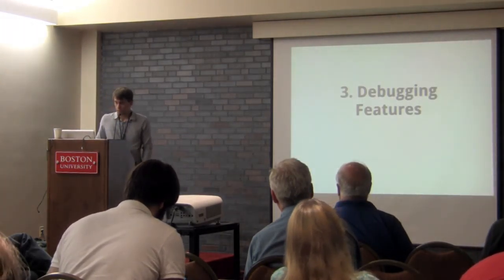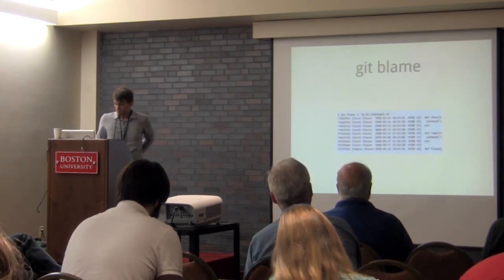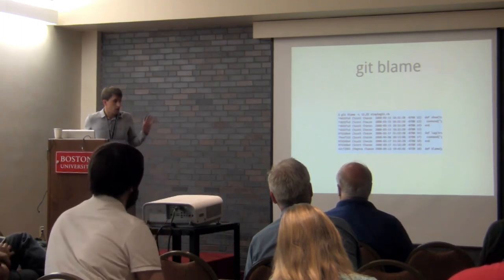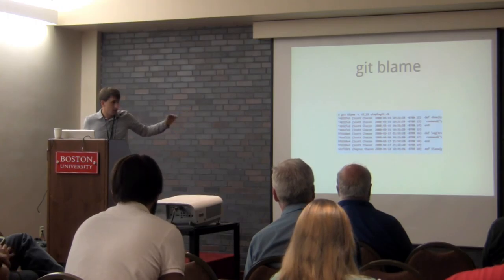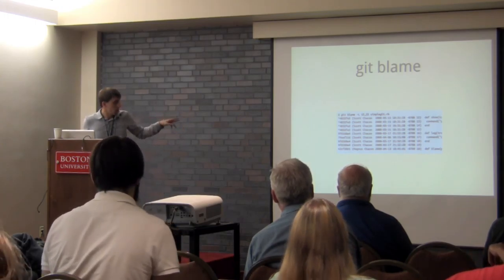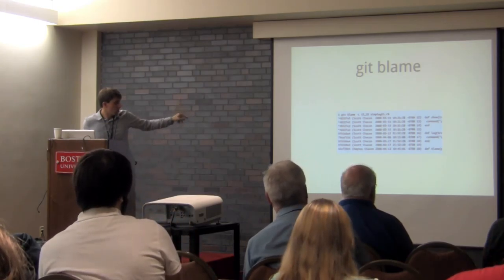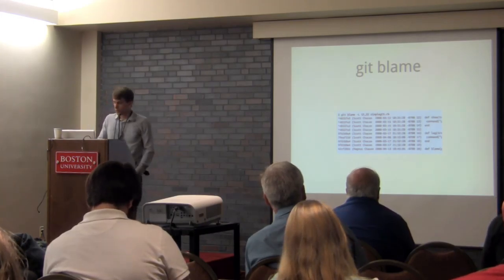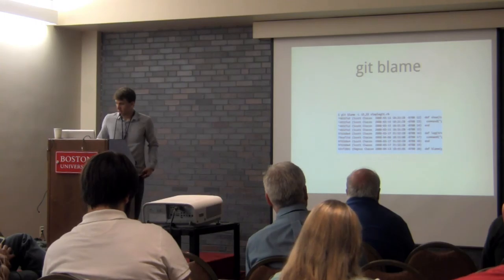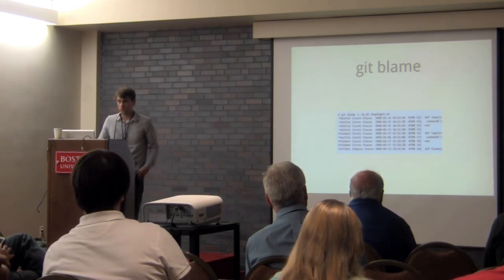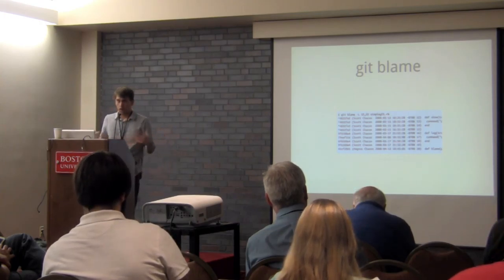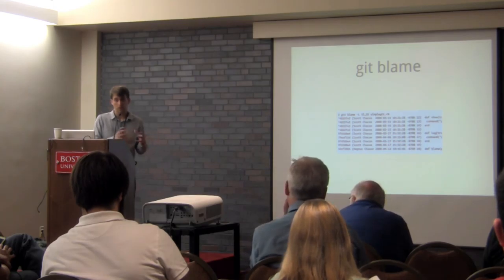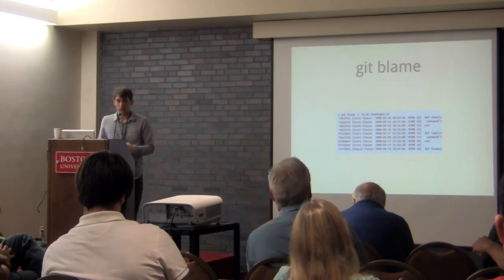The last thing I want to cover is the debugging features built into Git. There are two I've found very useful. The first is `git blame`. You run `git blame -L 12,22 <filename>` to see who wrote lines 12 to 22 of that file. It lists who committed those changes, when they were committed, and what the line of code is. If you're on a team and find an error, you can see who wrote that code so you can go talk to them about it.